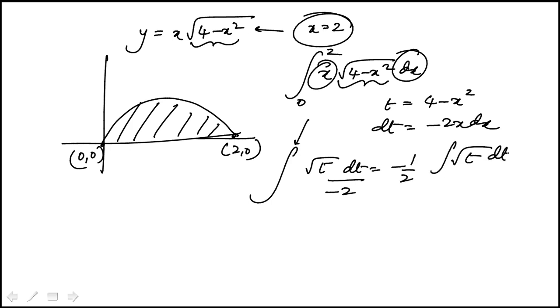And this we know how to integrate. This is t to the half plus 1 over half plus 1. And this is 3 over 2. That 2 knocks out. This becomes minus 1 third t to the power of 3 over 2. So that's the integration in terms of t.